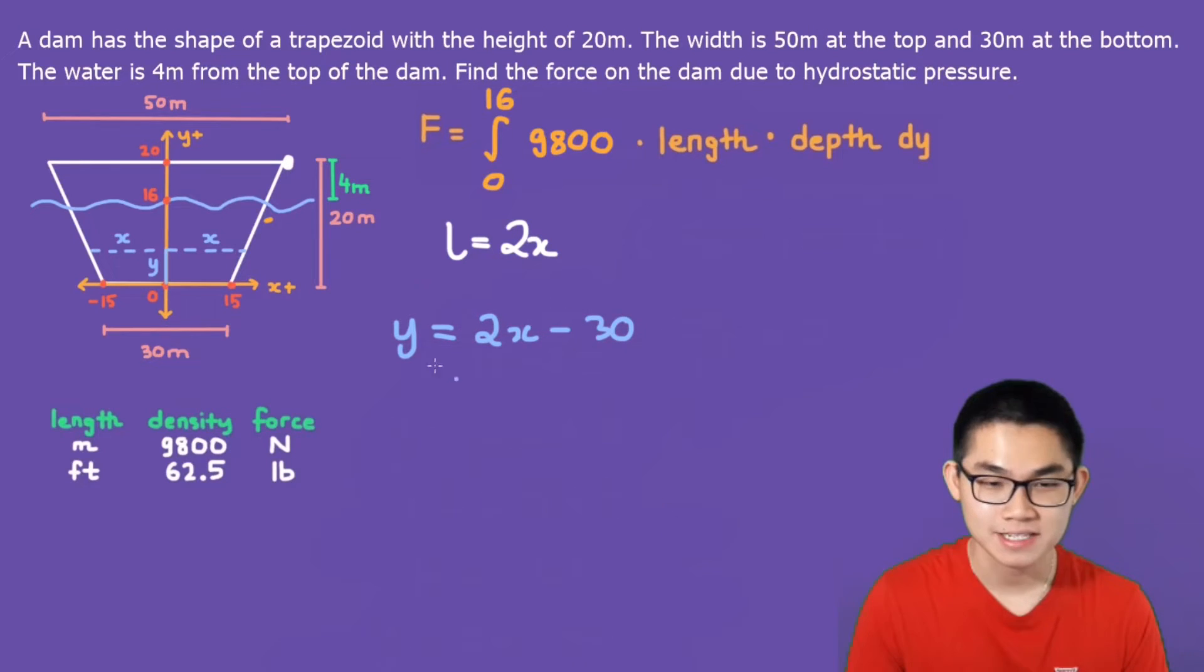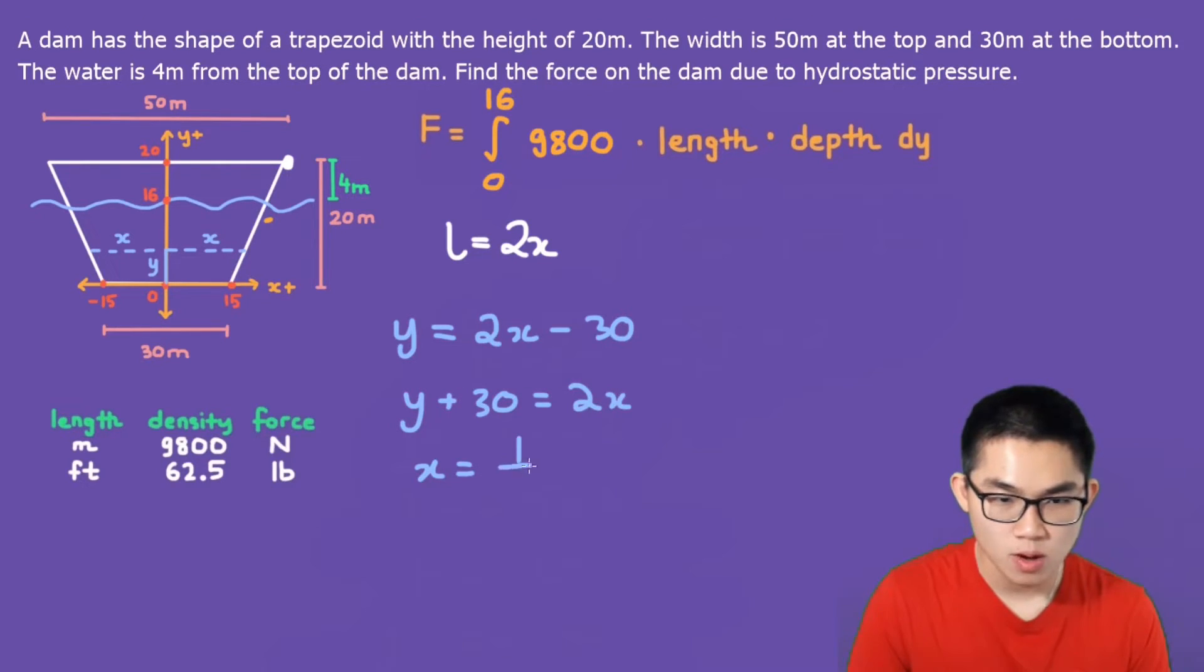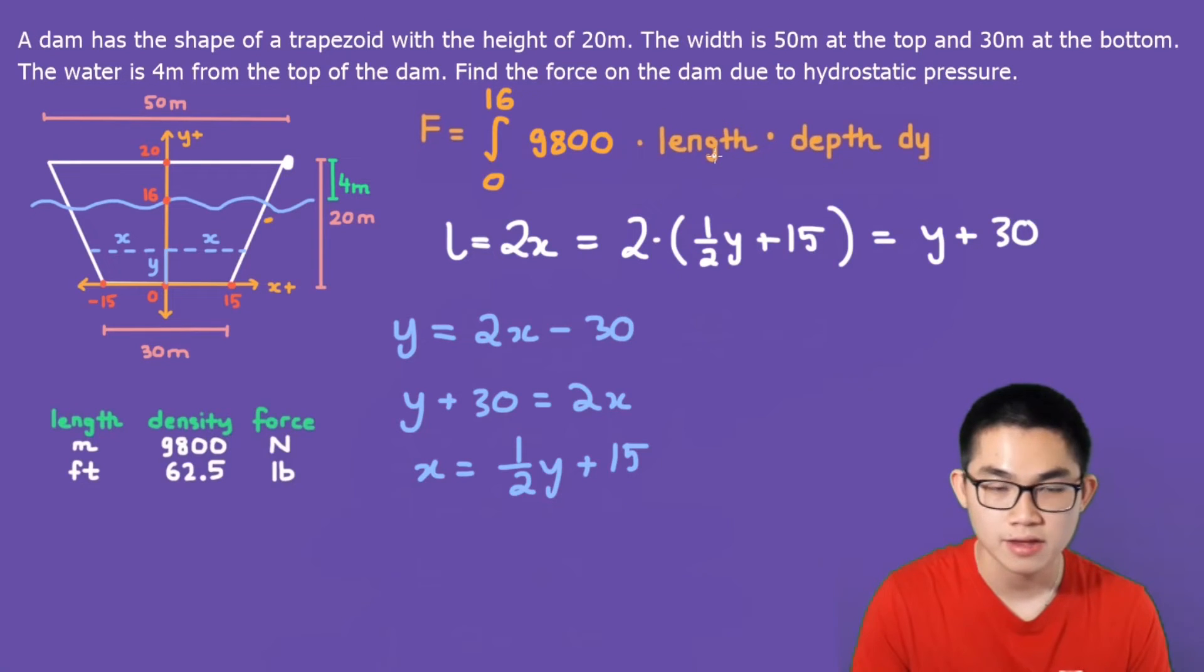So we get y is equal to 2x minus 30. Let's solve for x. So in this equation that we just found out, we get y plus 30 is equal to 2x. And then x is going to be 1 over 2y plus 15. So the length is 2x, which means 2 times 1 over 2y plus 15. That's going to be y plus 30. Let's put it back into the length here.